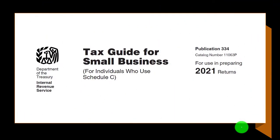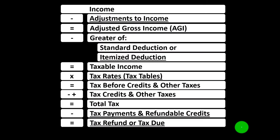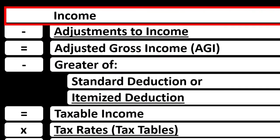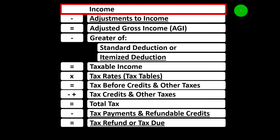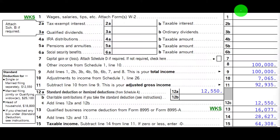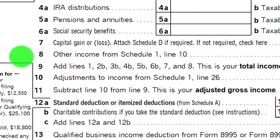Most of this information can be found in Publication 334, Tax Guide for Small Business on the IRS website, irs.gov. Looking at the income tax formula, noting that this will have a supplemental schedule — in essence an income statement with income and expenses. The expenses are basically deductions, and the net flows through to line 1, the income line, and to the first page of the 1040, ultimately going into line number 8.